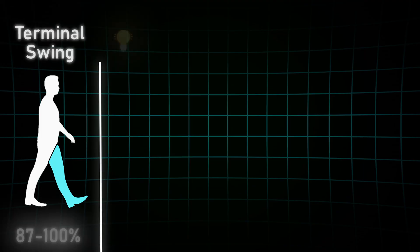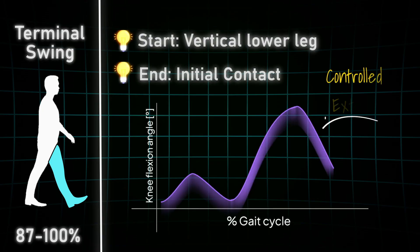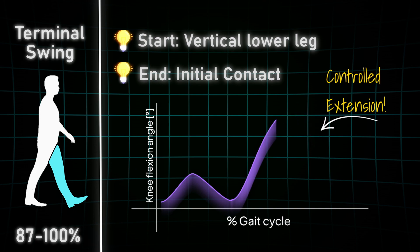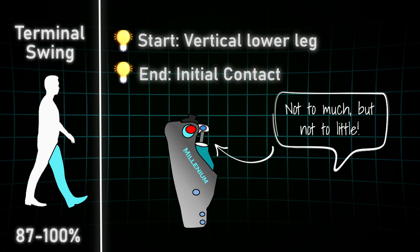And the last one, the terminal swing phase. It starts when the lower leg of the reference leg is vertical and ends with initial contact. Now the leg has to be stopped in a well-controlled manner. Our hamstrings are doing their job here. On the other hand, prosthetic knees need a well-calibrated extension resistance that is just enough to slow down the leg, but not too much, so that you would risk the patients from loading with a flexed knee and have the risk of falling.